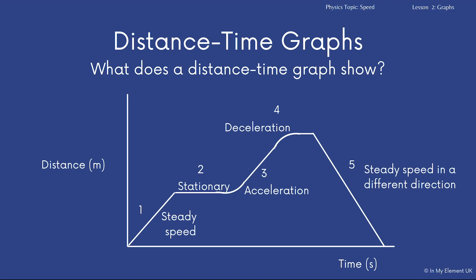Now point one, like I said, shows a steady speed. A flat horizontal line shows that the object is stationary. Now then as we gradually curve and increase up, we are accelerating.